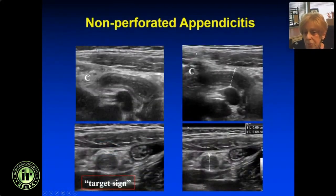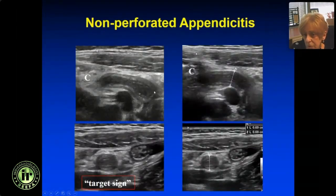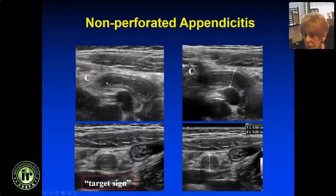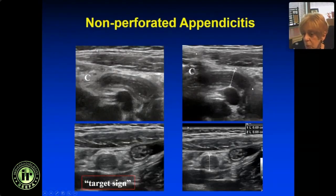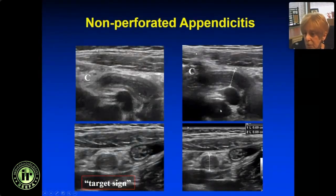Here's the cecum and here is the appendix — it's dilated, it has a blind end, there's echogenic mucosa and submucosa, and fluid in the lumen. We have the target sign on cross-section. This is really the image you want to make the diagnosis. You make measurements where the appendix is largest; I like doing it on the long view but you can do it on the short view or both. This one was 7 millimeters — that's appendicitis.